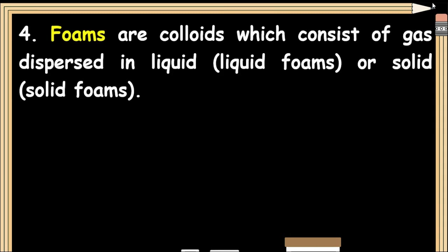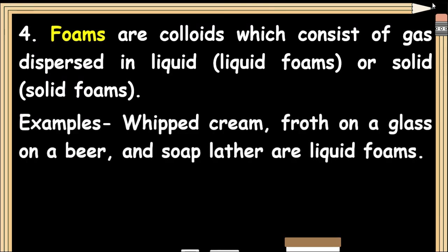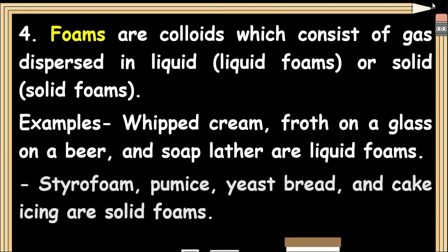Foams are colloids that consist of gas dispersed in a liquid (liquid foams) or solid (solid foams). Examples include whipped cream, froth, and a glass of beer — these are liquid foams. Soap lather is also a liquid foam. Styrofoam, pumice, yeast bread, and cake icing are solid foams.